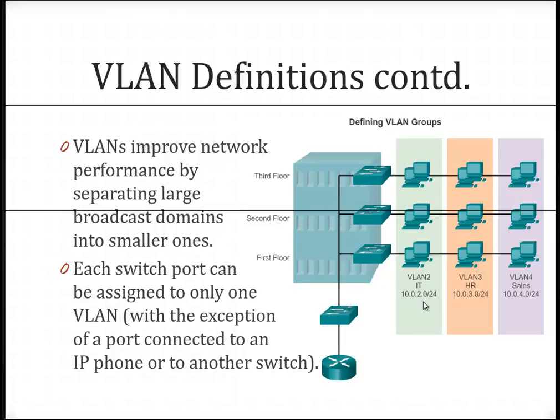So in this particular example, if one of the PCs on VLAN 2 were to send out a broadcast type of transmission, like DHCP traffic or an ARP request,